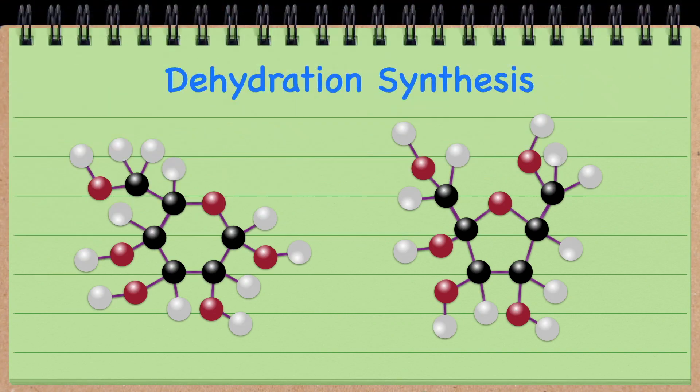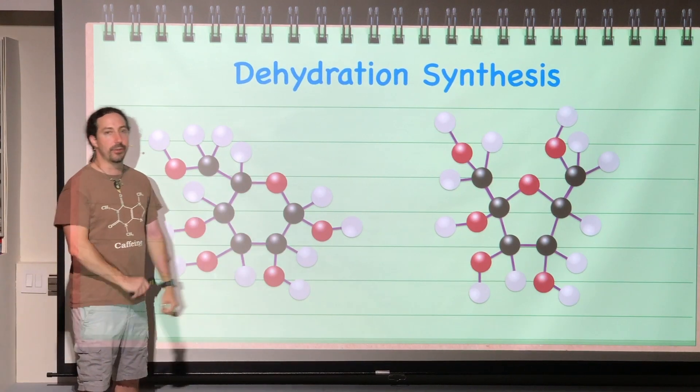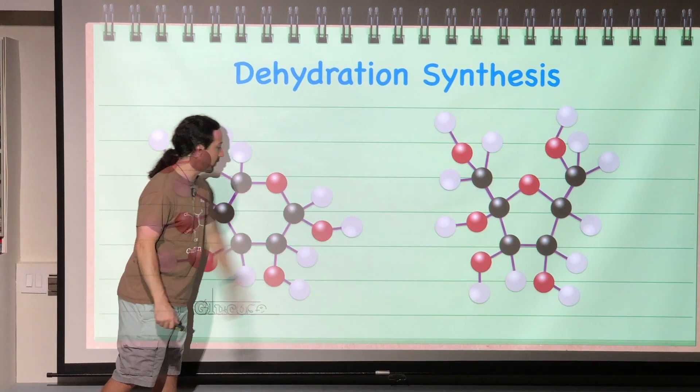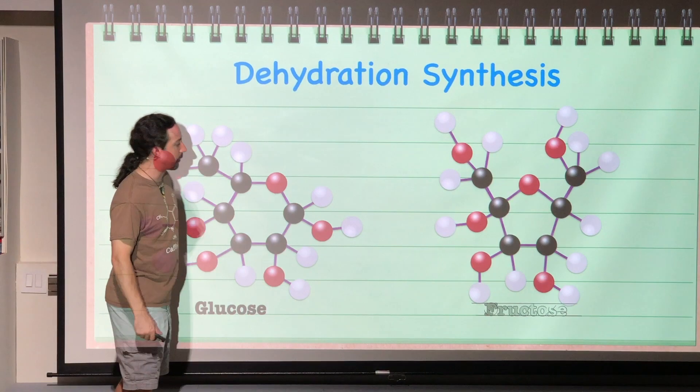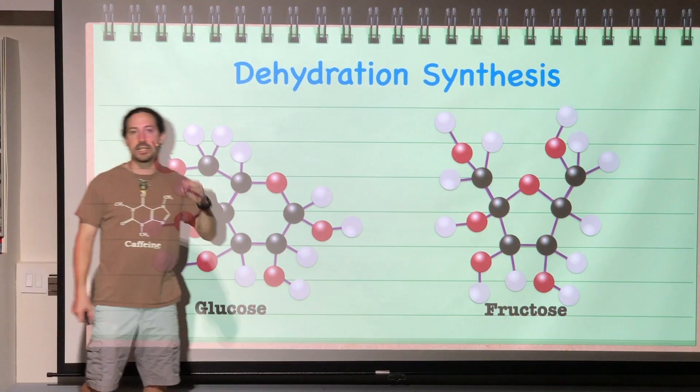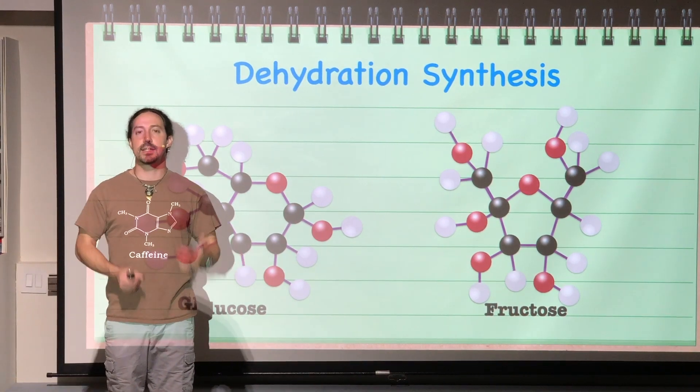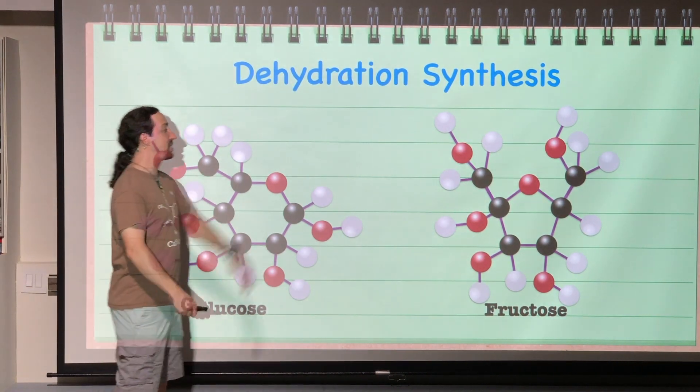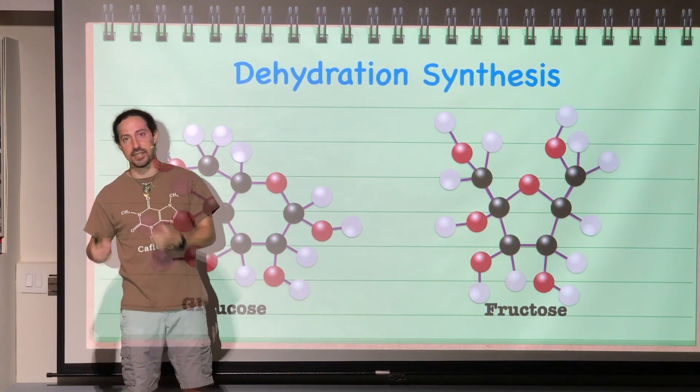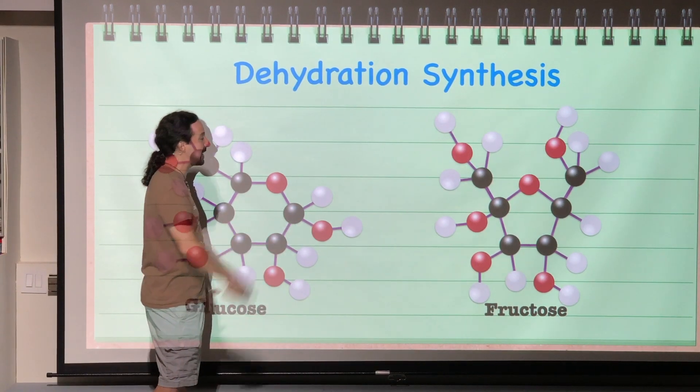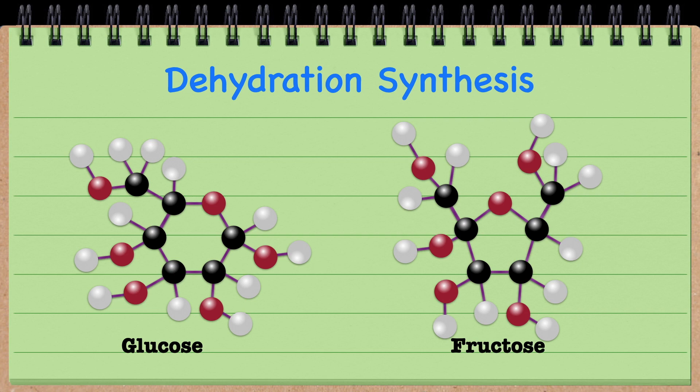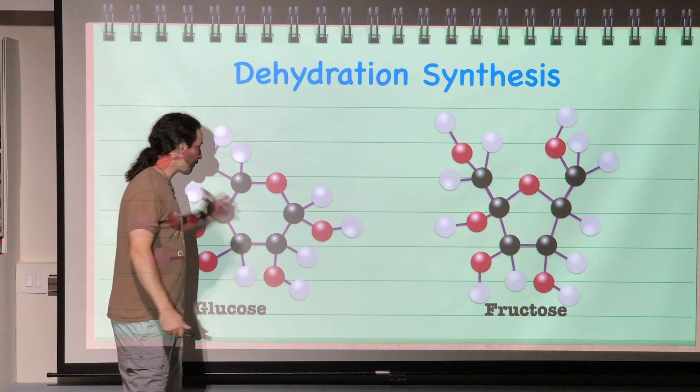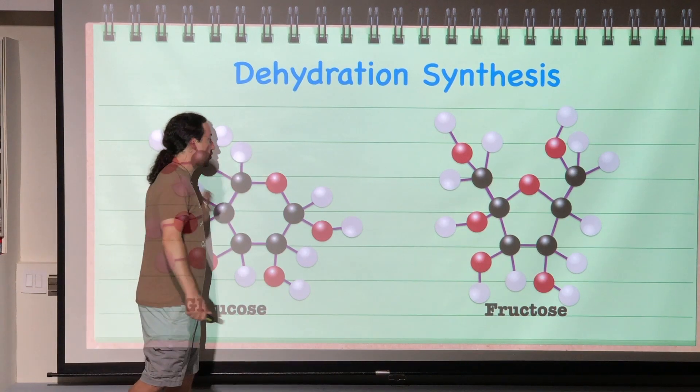So here we go. This is the molecules in question for right now. I would not expect you to be able to identify them, but if you could, this is glucose and this is fructose over there. Glucose has the molecular formula C6H12O6, which means it has six carbons, 12 hydrogens, and six oxygens. Fructose happens to have the exact same chemical formula, C6H12O6. It's just the arrangement of those atoms is different. So you can see that in glucose we have a hexagonal ring and fructose we have a pentagonal ring.